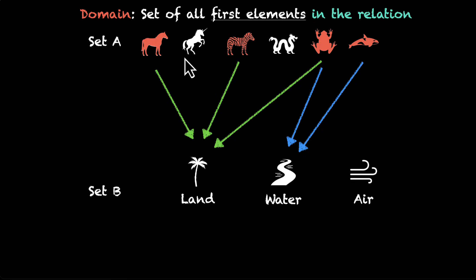There are a lot of elements in set A. We have the unicorn and the dragon as well. But we're not going to take them. We're only going to talk about the elements that are in the relation. So that's the definition of domain.